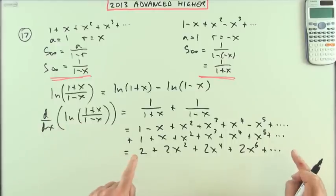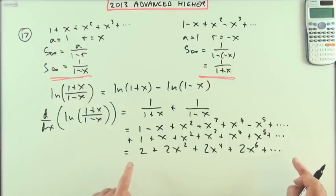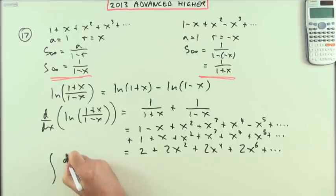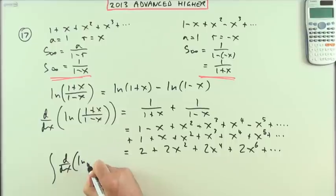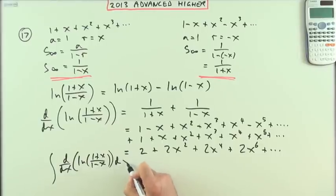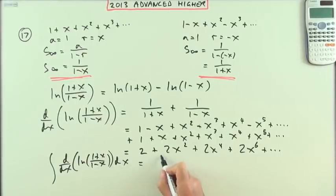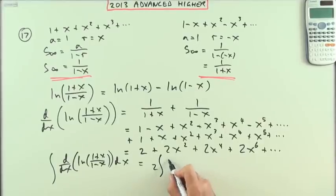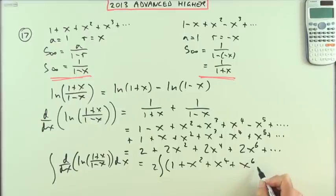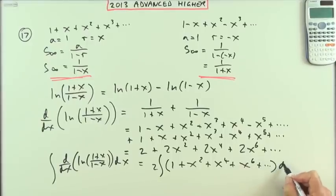The derivative of this produces that, so if I integrate both back up I'll get an expression for ln. That's why it said the thing about integration. If I integrate d/dx of ln((1+x)/(1-x))dx, that equals integrating this thing. There's a common factor of two, so might as well pop that out. Taking out the two I have (1 + x² + x⁴ + x⁶...)dx.